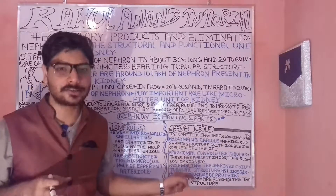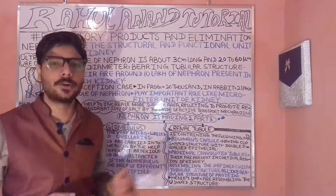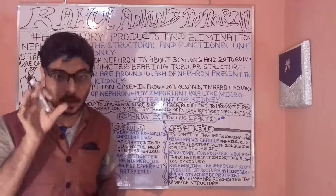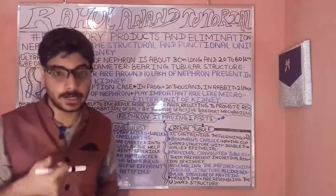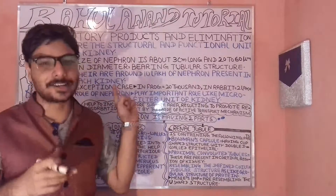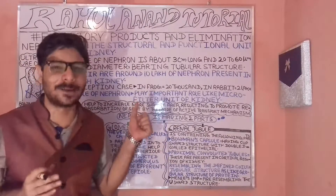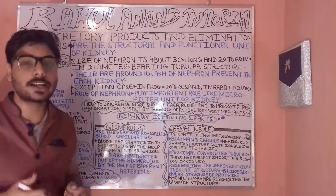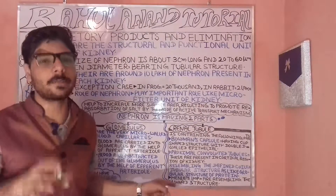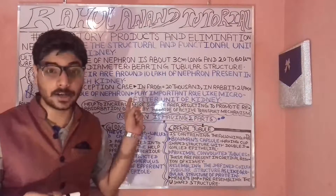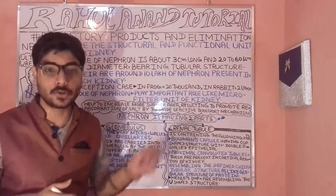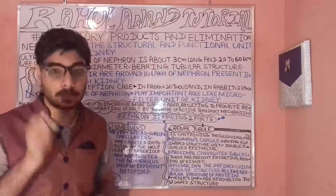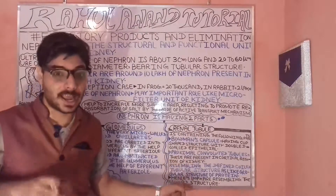The PCT, or proximal convoluted tubules, are present in the cortical region of the kidney. Looking at the diagram of the nephron structure, the PCT starts from the first portion and ends towards a specific region. The PCT resembles a highly coiled tubular structure, quite similar in appearance to a protein structure.